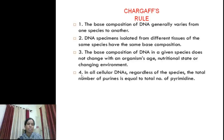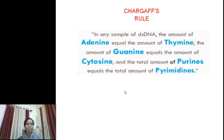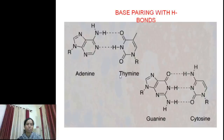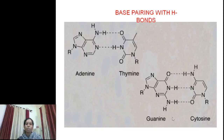The last rule is that regardless of species, the total number of purines is always equal to the total number of pyrimidines. For example, the number of adenine equals the number of thymine, and the number of guanine equals the number of cytosine. This diagram shows the pairing between nitrogen bases: adenine forms a double bond with thymine, and guanine forms a triple bond with cytosine. These bonds are hydrogen bonds.